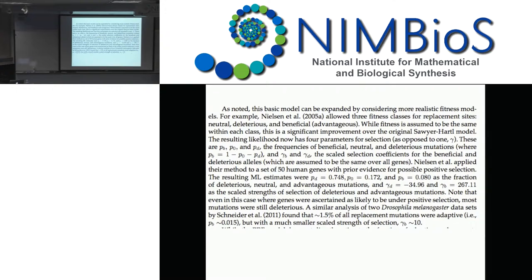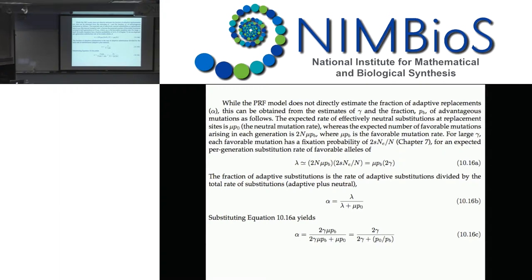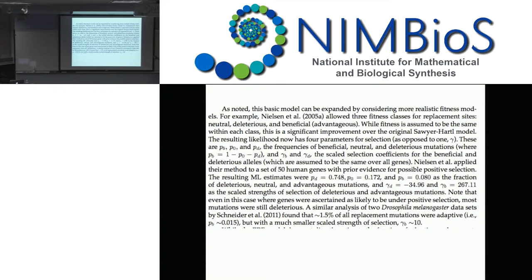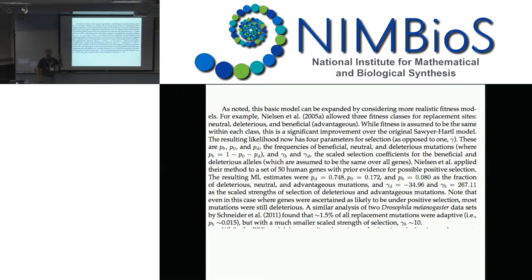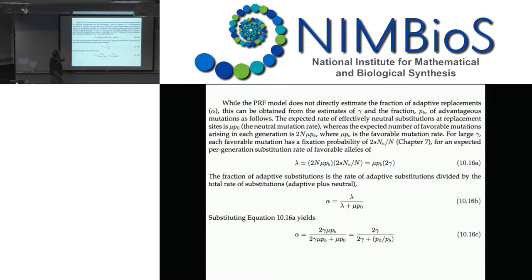For the human data, 8% were adaptive with scaled strength ~300. What does that translate to in terms of alpha? Almost 90%. Why? The deleterious class doesn't contribute to fixations. Even though more neutral mutations appear than beneficial ones, beneficial mutations have a much higher chance of being fixed. This set of genes was specifically chosen because of prior evidence of selection, so it's an inflated sample, but when you put these together, the fraction alpha comes out quite high.